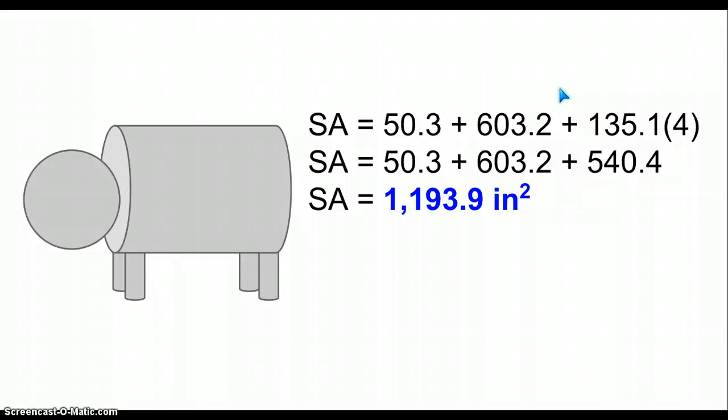Now again, for the surface area, you basically just add all of the objects together. 50.3, which is the head, 603.2, which is the torso, and 135.1 times 4, because you have 4 legs. And then you'd get about 1,193.9 inches squared. Squared because it is surface area.